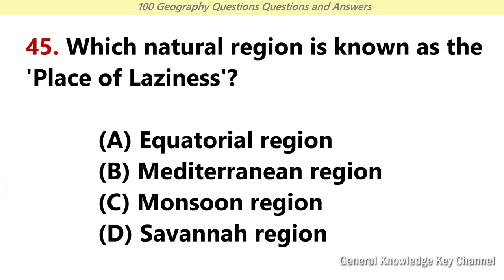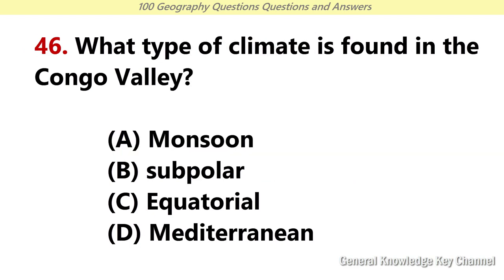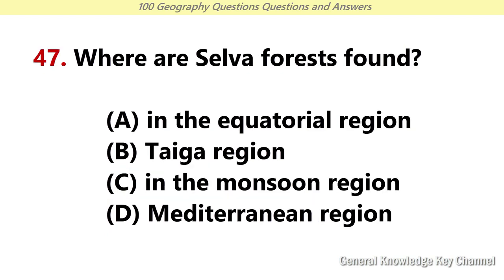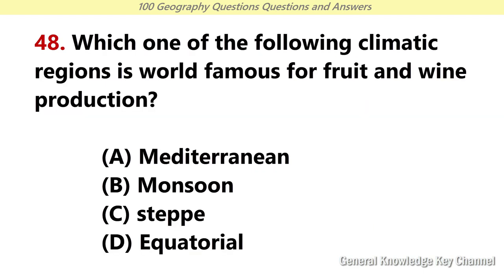Which natural region is known as the place of laziness? Answer A: Equatorial region. What type of climate is found in the Congo Valley? Answer C: Equatorial. Where are Selva forests found? Answer A: In the equatorial region. Which one of the following climatic regions is world famous for fruit and wine production? Answer A: Mediterranean.